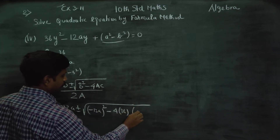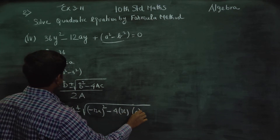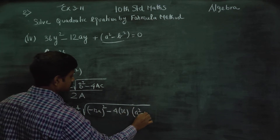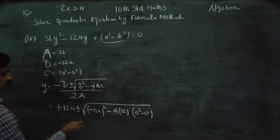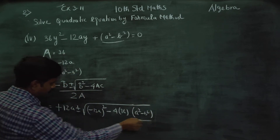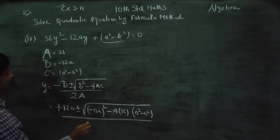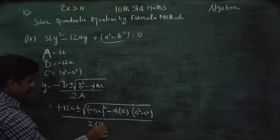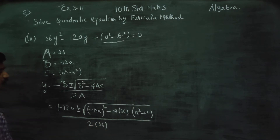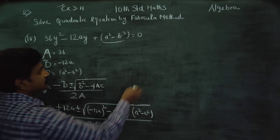C is A squared minus B squared. Divided by 2A, which is 2 into 36, giving us 72 in the denominator.